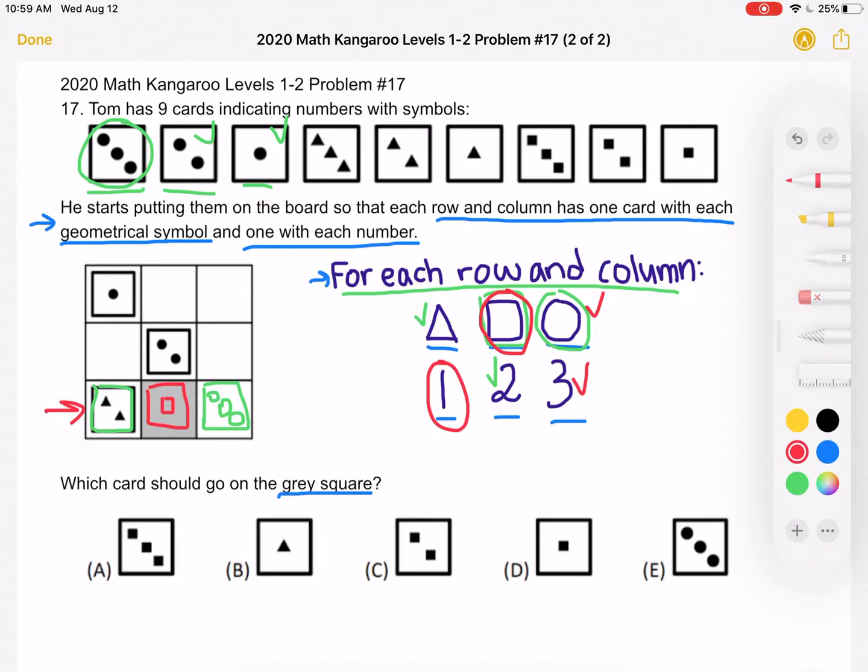Which means that the card that should go in the gray square is answer choice D, one square. Thank you so much for watching, and please subscribe if you would like to see more videos.